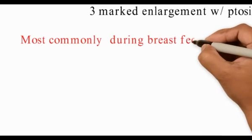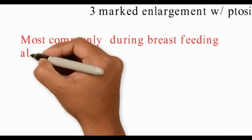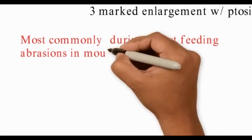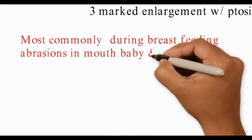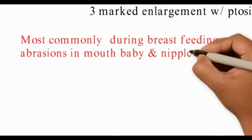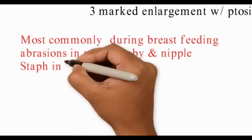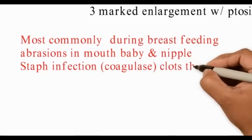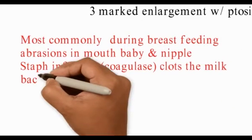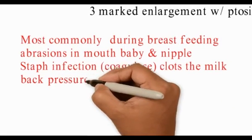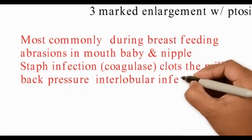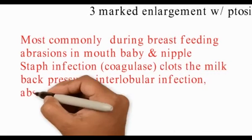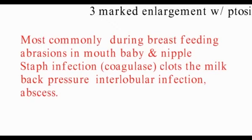Breast infections could either be primary or secondary, and they are most commonly seen during breastfeeding. Abrasions in the baby's mouth or the nipple are infected with Staphylococcus, and when it enters the milk ducts it causes clotting of the milk. There is a back pressure leading to an interlobular infection forming an abscess.